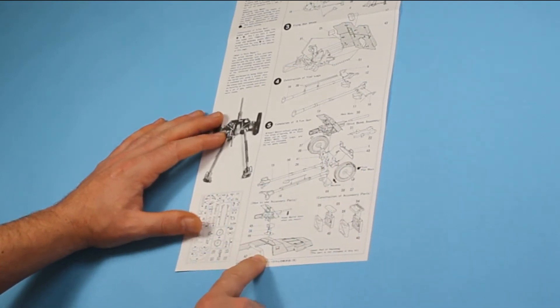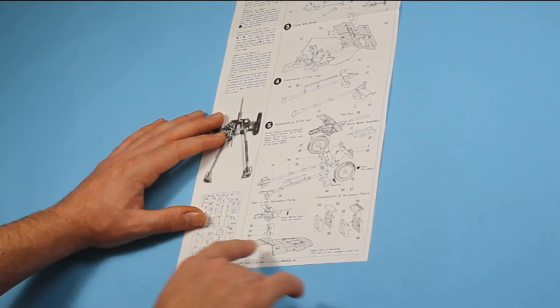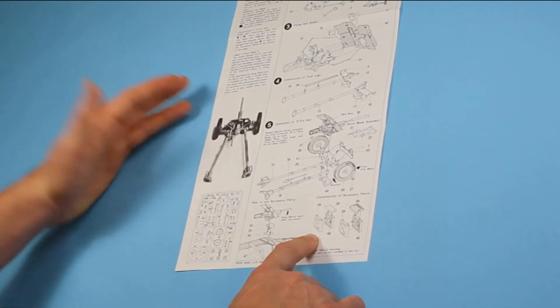You've also got parts here if you want to add it to the Hanamag kit, which is the SD KFZ 251. And there's a few parts here for ammo boxes with open or closed. So obviously, like I say, a very simple kit, probably put this together in a day without much issue.